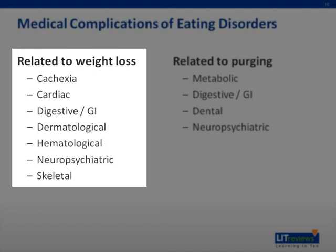In the GI system, an individual can experience delayed gastric emptying, which causes bloating, constipation, and abdominal pain. In females, the reproductive system is affected, resulting in amenorrhea, low LH and FSH levels, and infertility.